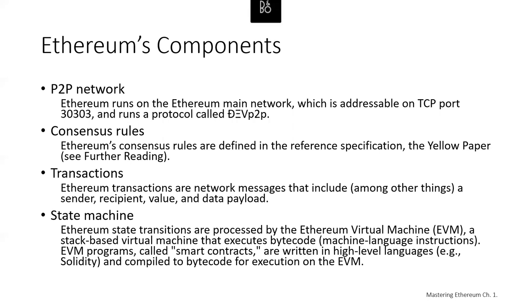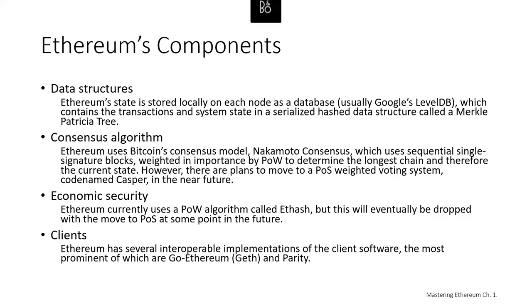In Ethereum, the components of a blockchain include: a peer-to-peer network — Ethereum runs on the Ethereum main network, addressable on a particular TCP/IP port; consensus rules — Ethereum's consensus rules are defined in the reference specification, the Ethereum Yellow Paper; transactions — Ethereum transactions are network messages that include, among other things, a sender, a recipient, a value, and a data payload; a state machine — Ethereum state transitions are processed by the Ethereum Virtual Machine (EVM), a stack-based virtual machine that executes bytecode. EVM programs called smart contracts are written in high-level languages like Solidity and compiled to bytecode for execution on the EVM. From a data structures perspective, Ethereum state is stored locally on each node as a database, usually Google's LevelDB, which contains the transactions and system state in a serialized hash data structure called a Merkle Patricia tree.